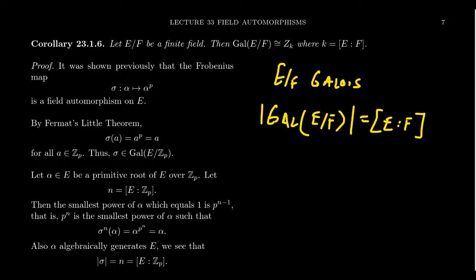In order to apply this theorem, we have to argue that this is a Galois extension. Why is it always a normal extension? Why is it always a separable extension? We've proven that every finite field is a splitting field over Z_P, and therefore it will be a splitting field for the same polynomial X to the P to the K minus X. Since E is a normal extension over Z_P, it'll be a normal extension over F. Likewise, it's a separable extension over Z_P, so it'll be a separable extension over F as well.